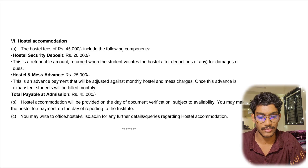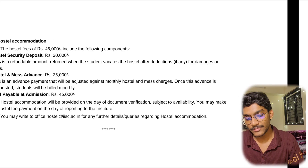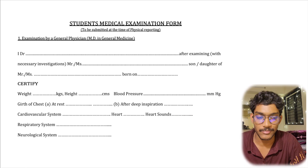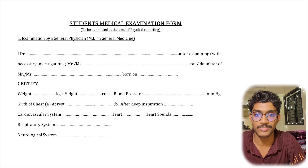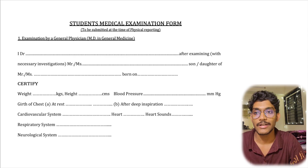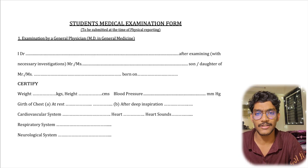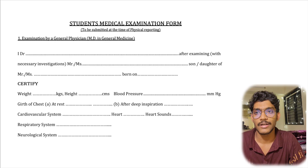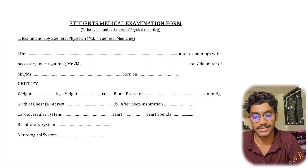Apart from the fees, there are several other things to complete. First, there are consent forms from the student and parents — regarding anti-ragging, behavior, not using motorized vehicles, and other matters. You have to fill these up, sign them, and submit them during admission.